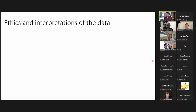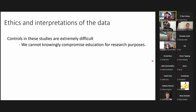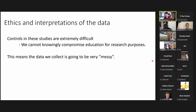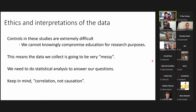Before diving in, a note on ethics and data interpretation: controls in these studies are extremely difficult. One subtle point is that we cannot knowingly compromise education for research purposes. Because it's so well documented that traditional classrooms underperform compared to active classrooms, we can't just create a bunch of traditional classrooms as a control group because we'd be compromising their education. The long story short is that our data will be very messy, and we need statistical analysis to answer our questions. It's also important to keep in mind: correlation, not causation.